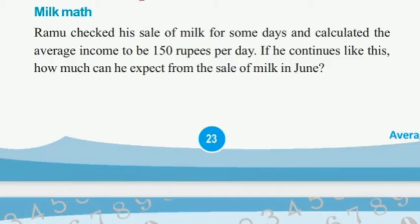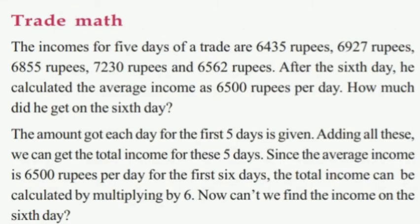The incomes for 5 days of a trader are 6,435 rupees, 6,927 rupees, 6,855 rupees, 7,230 rupees, and 6,562 rupees. After the 6th day, he calculated the average income as 6,500 rupees per day. How much did he get on the 6th day?